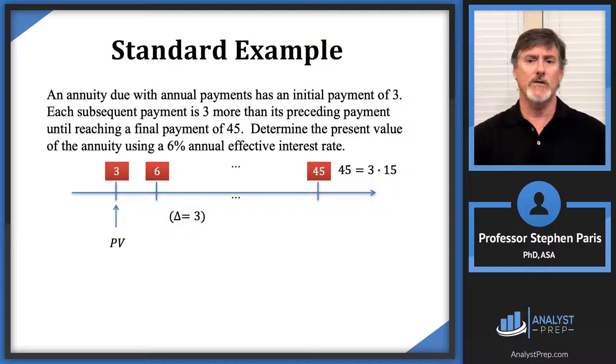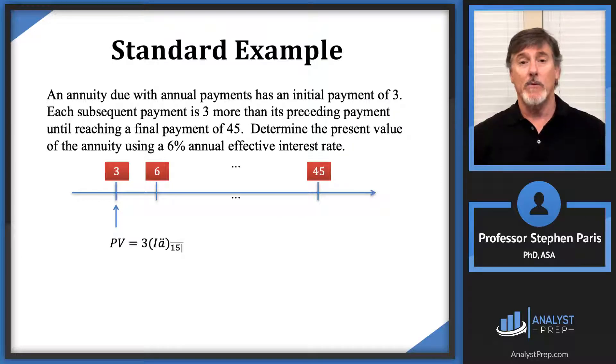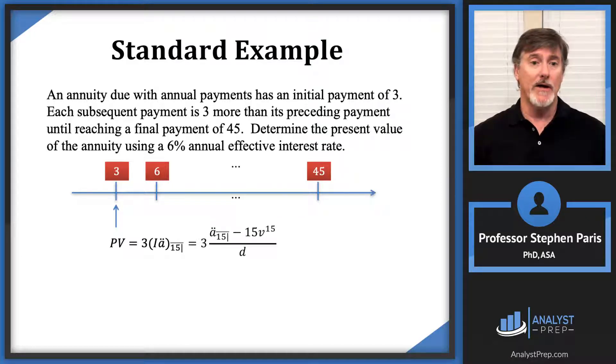So the present value symbolically is just 3 times the cap I a double dot angle 15. Now when I plug in a closed-form formula for the cap I a double dot angle 15, I get this.